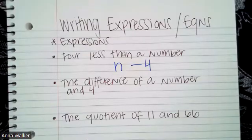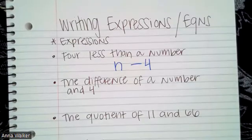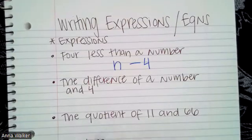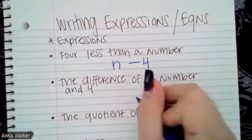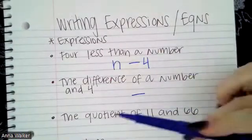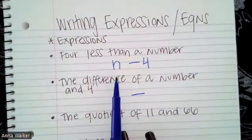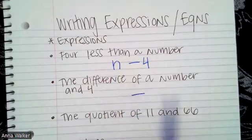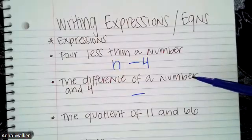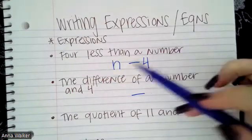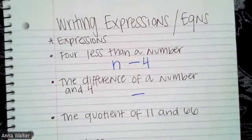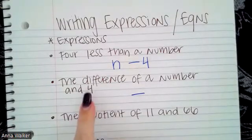Let's look at the second one. The difference of a number and four. So the key term here is difference, right? Difference is also going to mean subtraction. So am I going to get the same thing? I have a number and I have four again, but it says the difference of a number and four. So in this case, we have to remember N minus four and four minus N are not necessarily going to be the same thing.